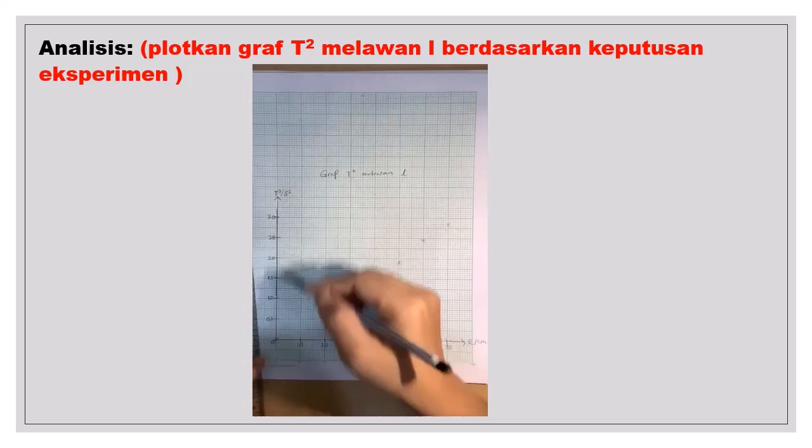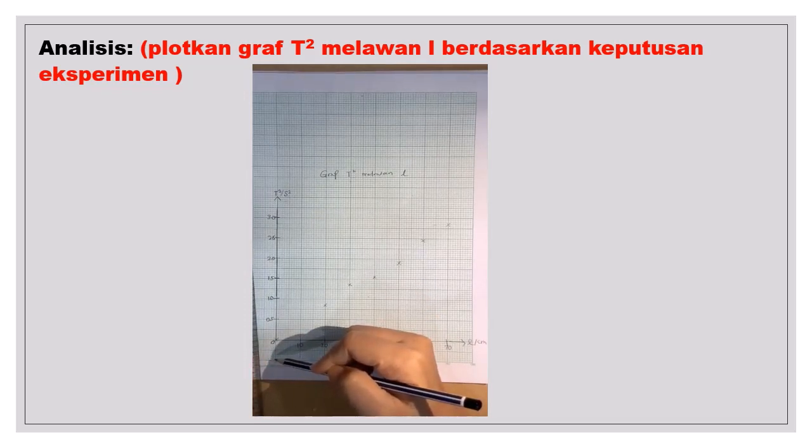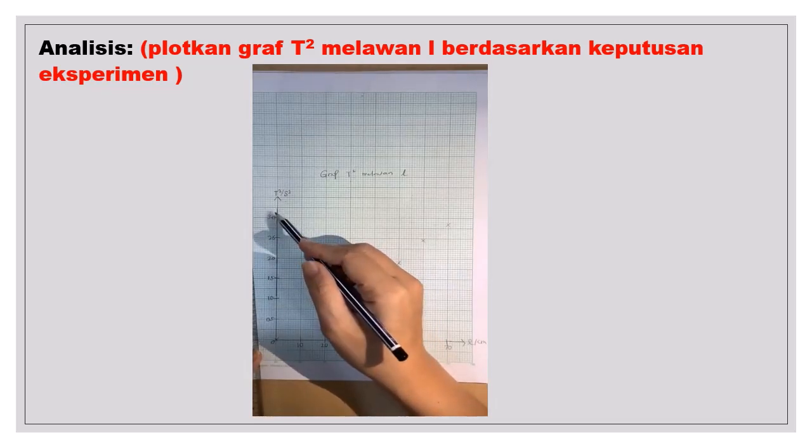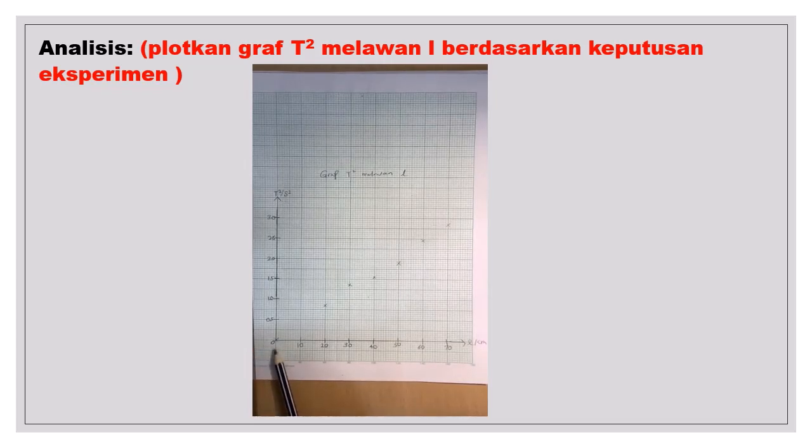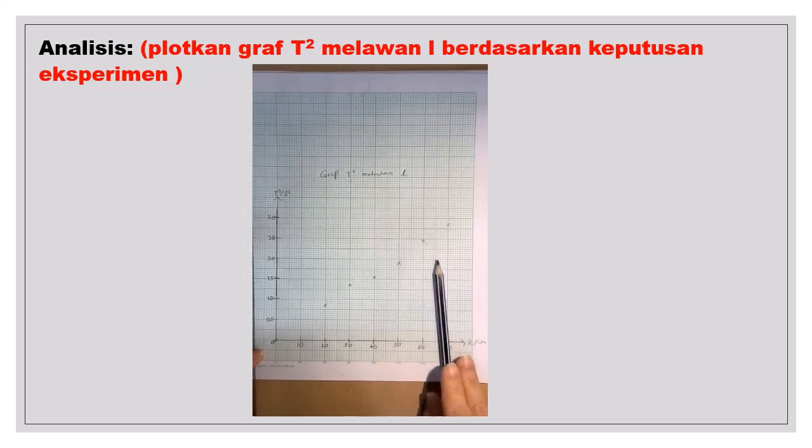Kemudian skala yang anda pilihkan berkandung kepada berapa nilai yang kamu dapat daripada eksperimen untuk T kuasa 2. Kemudian yang paksi L. Sebab kamu membuatkan eksperimen daripada 20 sampai 70. Jadi nilai yang maksimum ialah 70. Jadi kamu tandakan bermula dengan kosong. Kosong, 10, 20, 30, 40, 50, 60, 70. Walaupun kamu tak ada nilai untuk 10 cm, tetapi kamu masih kena mulakan daripada kosong. Sebab untuk fizik, biasanya kita plokkan graf bermula daripada kosong. Sebab kita nak tahu sama ada garisan graf tersebut melalui asalan kosong-kosong.